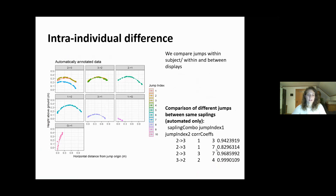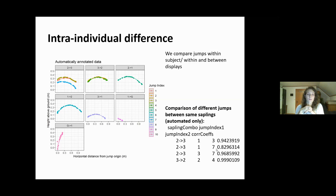Our next step was to understand if there is some difference within one individual. We compared chomps of one subject across several displays — always the same chomps from the same saplings but across different displays. This also helps us understand how many data we really need to collect to be able to analyze this. As you can see, they are also quite similar.